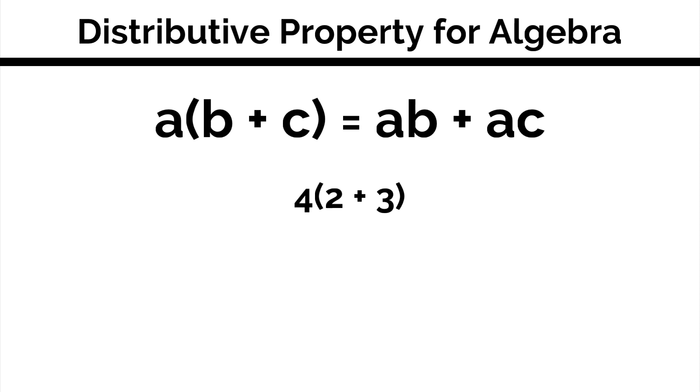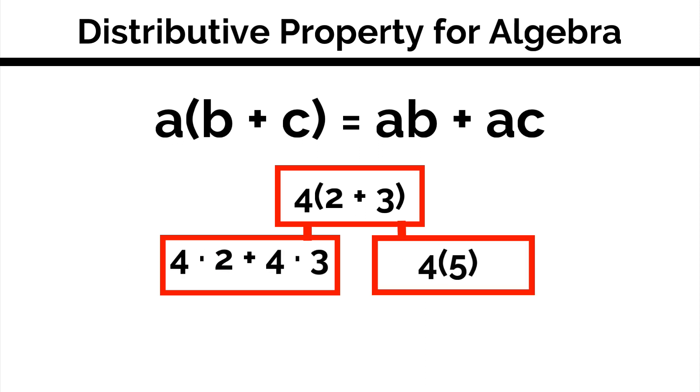This didn't matter too much for arithmetic because 4 times the quantity of 2 plus 3 is certainly equal to 4 times 2 plus 4 times 3. But there is nothing stopping us from adding 2 and 3 first and then multiplying by 4. We should get 20 no matter what method we choose.